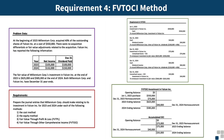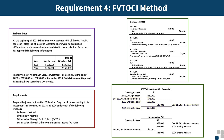Looking at the T-account for the FVTOCI investment in Falcon, it is basically the same as the FVTPL method, with the same remeasurements at December 31st, 2023 and 2024, and the same ending balances in both years. What's new is an accumulated OCI account that tracks the accumulation of unrealized gains and losses. Starting at zero, there's a credit of $75,000 at December 31st, 2023 for the unrealized gain, giving an ending balance of $75,000. Then the $40,000 unrealized loss in 2024 is debited to accumulated OCI, resulting in a final ending balance of $35,000 at the end of 2024.